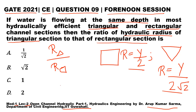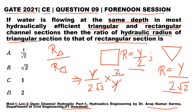So the ratio of R(triangular) to R(rectangular) is (y / 2√2) divided by (y / 2), which gives us 1/√2. So the answer is Option A, which is correct.